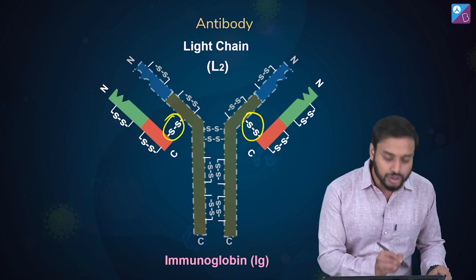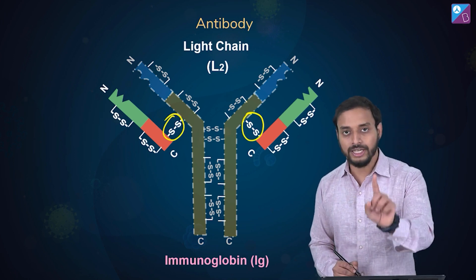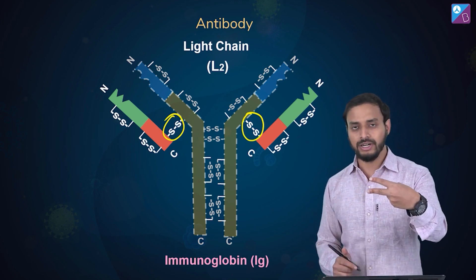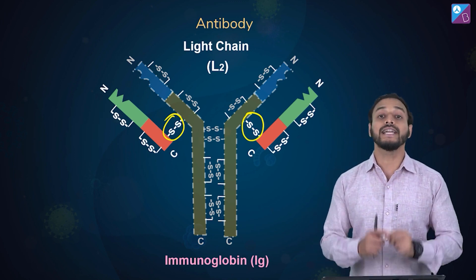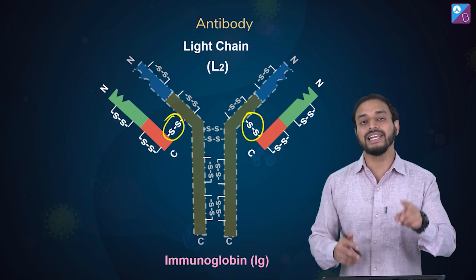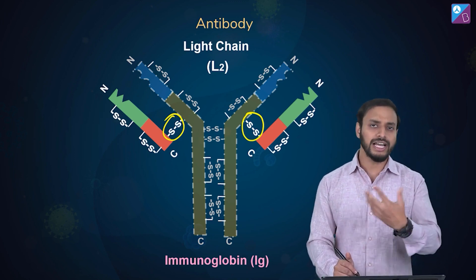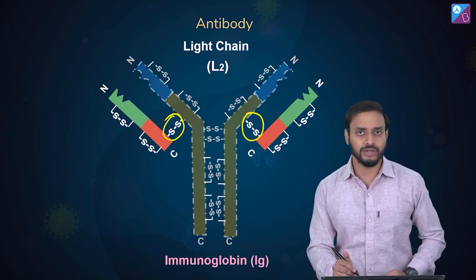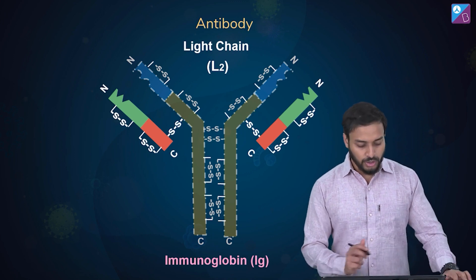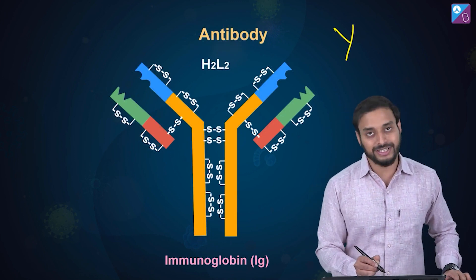One disulfide bridge for each light chain–heavy chain pair. So to summarize: the heavy chains are linked by two disulfide bridges, and each light chain–heavy chain pair is linked by one disulfide bridge. This completes the overall Y-shaped antibody structure.